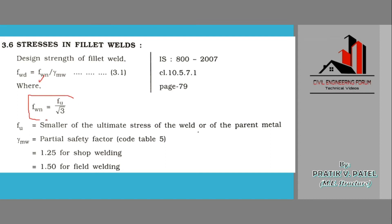We are having the formula for finding out the value of fwn, that is fu (ultimate stress) divided by square root 3. Regarding the value of gamma mw, again it is specified in table number 5 in IS code.